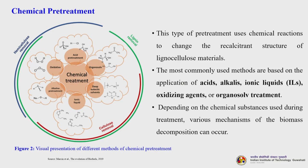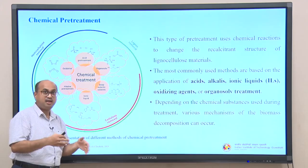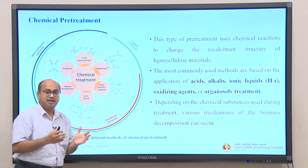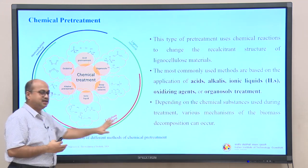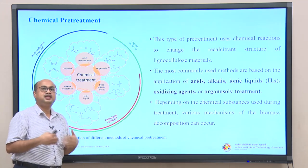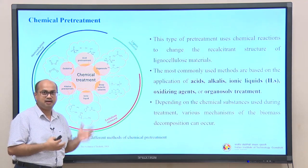This particular image is a beautiful image. It can tell us how different types of chemical treatments are there and how they overlap each other. Looking at the green boundary, it is almost taking into everything except a little part of the acid pretreatment. This green boundary pertains to lignin removal - all processes under this green will do lignin removal more efficiently than other processes.